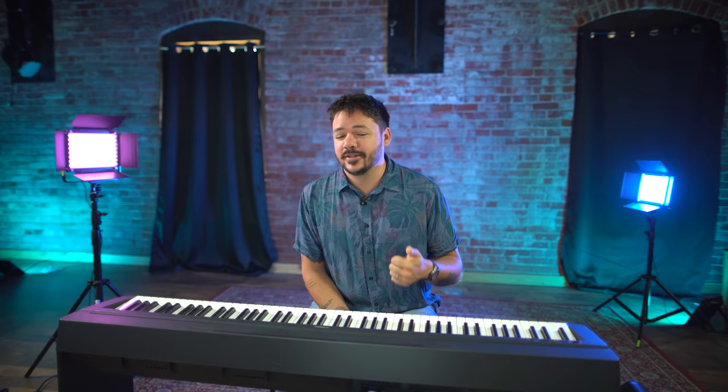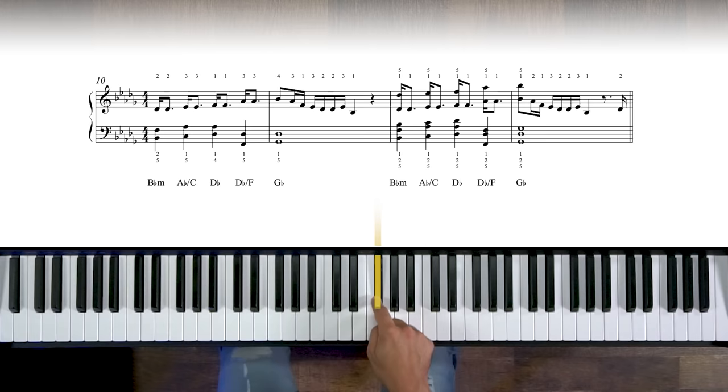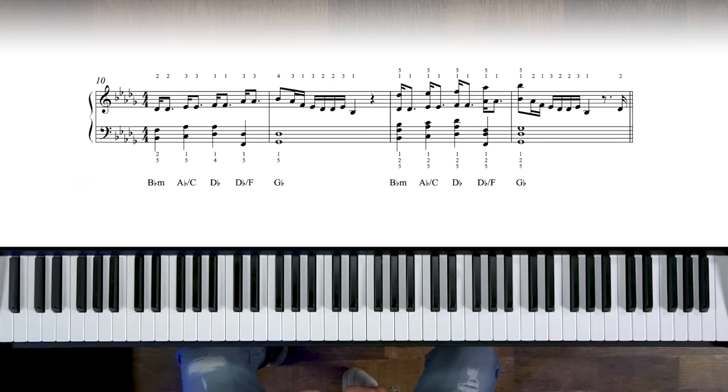So right out of the gate, we can see that the key signature is a complicated one, five flats. B-flat, E-flat, A-flat, D-flat, and G-flat. Those are all in the key signature. That tells us we're in the key of D-flat major or B-flat minor. Remember, every major key has a related minor key or a relative minor key that shares the same key signature. So we're in the key of D-flat major or B-flat minor here. The key thing to remember is five flats in notation.